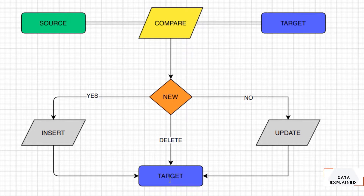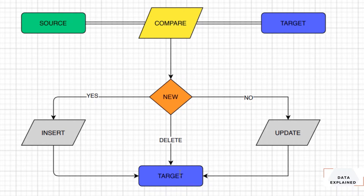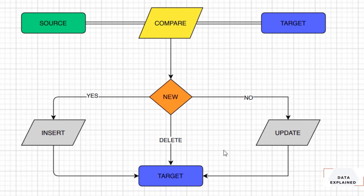Also, let's say a customer leaves the company — they need to be removed from the target. The best approach is you don't have to delete the customer from the target database. All you do is create a new column called 'is_deleted'. In that column you say true or false — if the customer is still in the company, mark it as false; if the customer leaves, mark it as true, which means the customer has left.